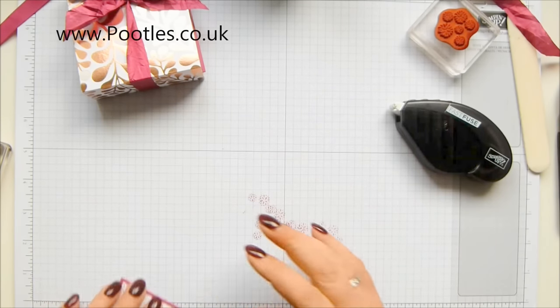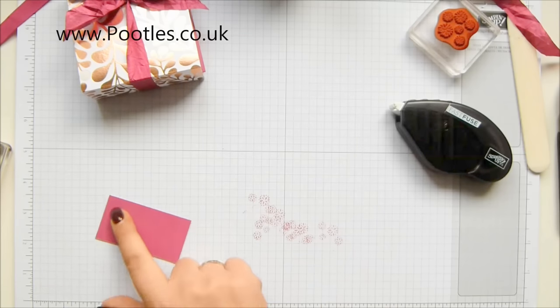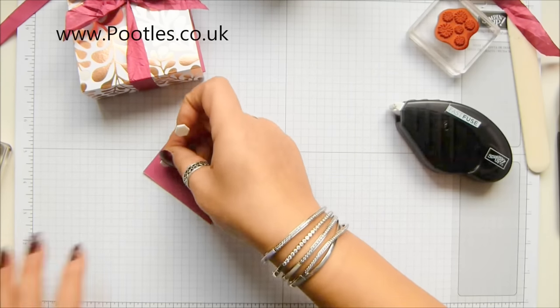Pop that on there, and then I want dimensionals for this because I want them on the outer edges so that I can still slide my ribbon around.